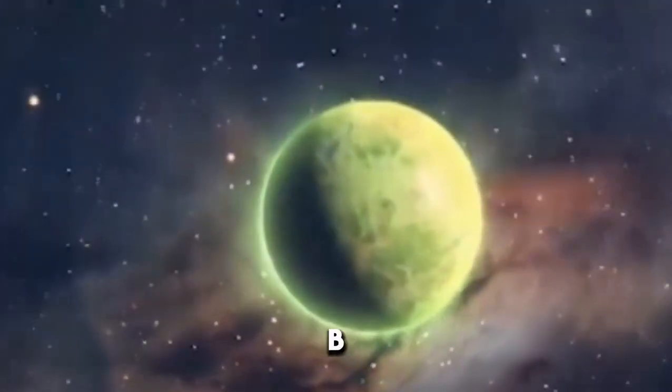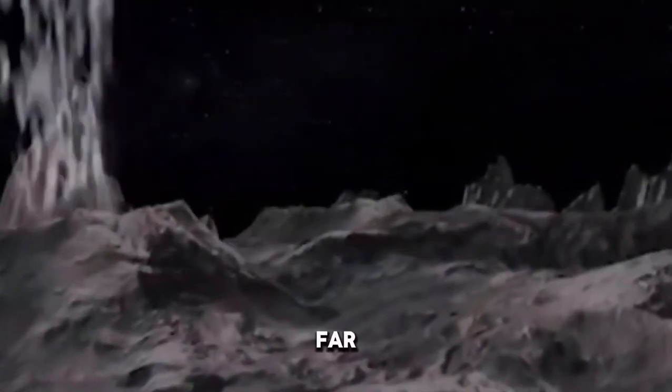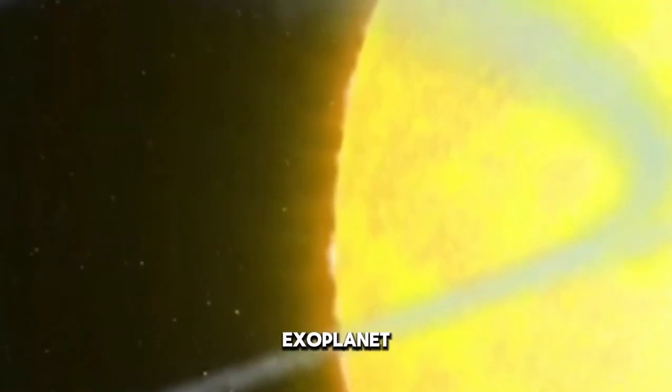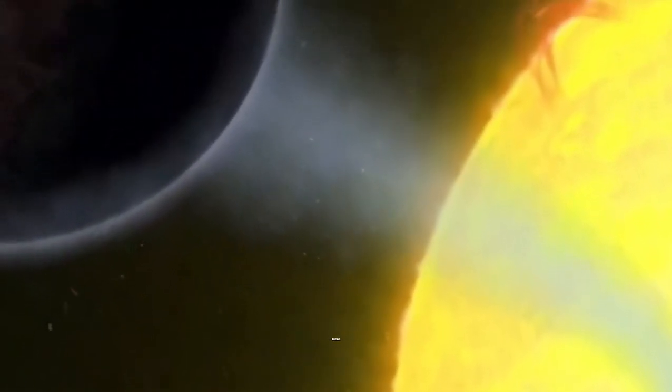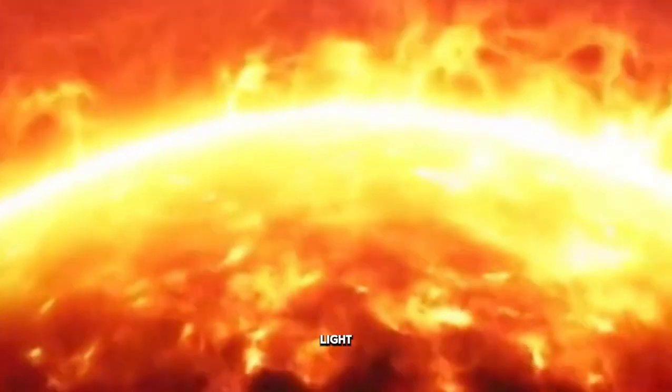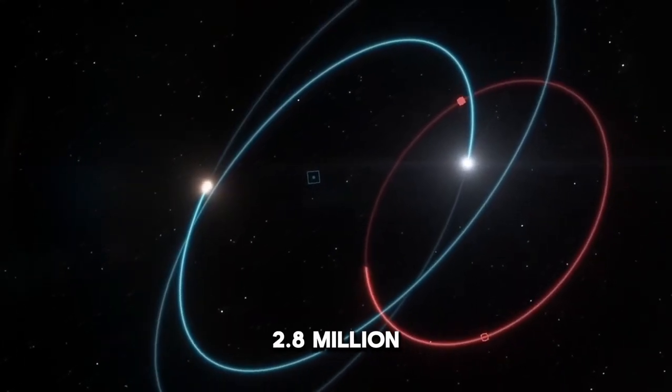While Kepler-452b is exciting, there are other promising Kepler worlds, though they are quite far away. It takes light 1,800 years to reach this exoplanet. So what about our fastest spacecraft, the Parker Solar Probe? It's impressive, but it's only 0.063% of the speed of light. A direct trip from Earth to Kepler-452b would still take an astonishing 2.8 million years.